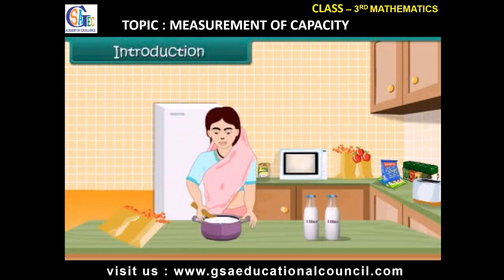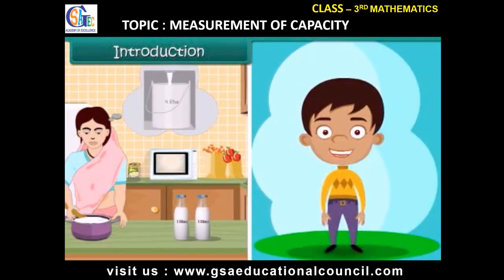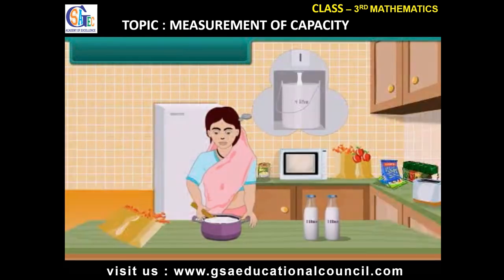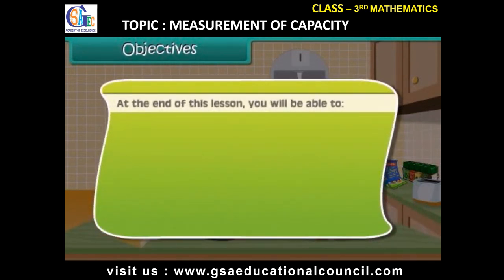Introduction: Everyday Rama's mother bought two liters of milk. However, today some guests are coming for dinner, so she will be preparing custard. Therefore she bought four liters of milk from the milk booth. How do we measure liquids? Let us find out in this lesson. Objectives: At the end of this lesson, you will be able to compare capacity and measure capacity.